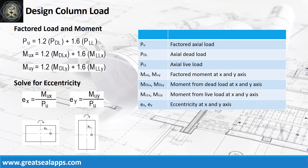Get the factored actual load from actual dead load and actual live load. Get the factored moment from moment dead load and moment live load for both x and y axes, then solve for corresponding eccentricities.